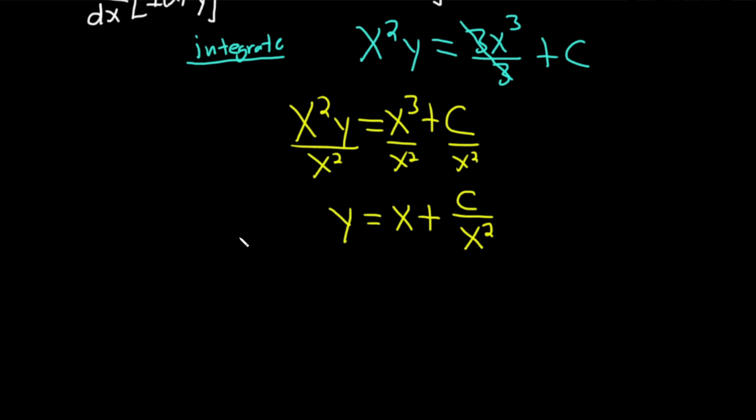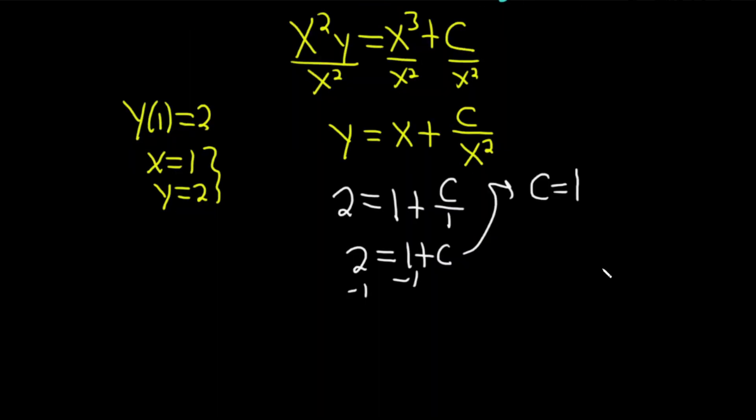Now we're trying to solve the initial value problem. Our initial condition was y(1) = 2, which means that x is 1 when y is 2. So we take these numbers and plug them into this equation to solve for c. So 2 = 1 + C/1, which gives us 2 = 1 + C, so C = 1. Our final answer is y = x + 1/x² as the solution to the initial value problem.